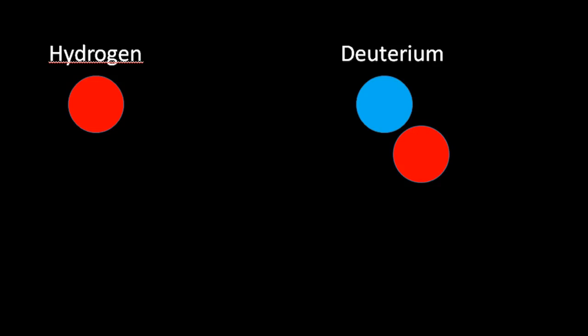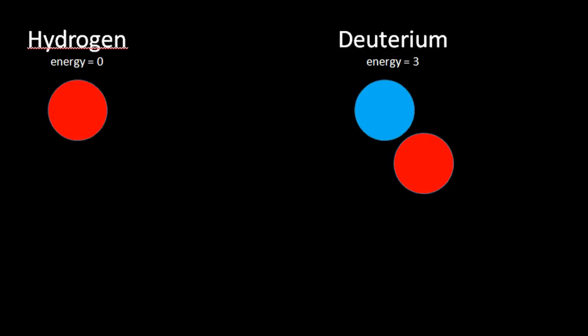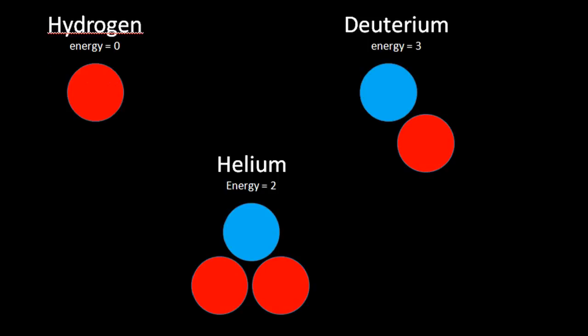Because of the gravity, hydrogen and deuterium meet each other and fuse together. As an example, if deuterium has an energy of 3 to keep the proton with its neutron and hydrogen has an energy of 0, because it has only one proton, when they fuse together there is only an energy of 2 needed to keep it together.